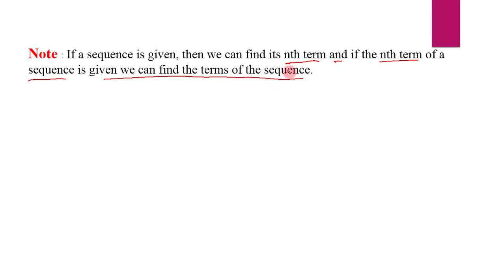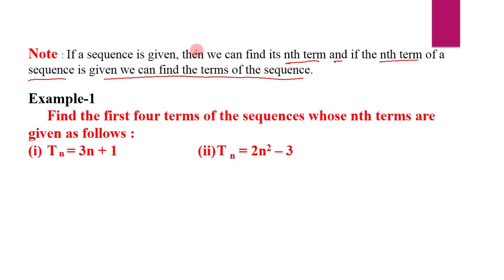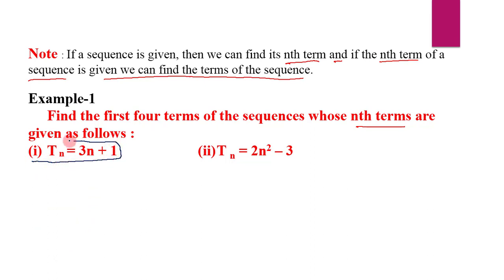Example 1: Find the first four terms of the sequence whose nth term is given as Tn = 3n + 1. Since the nth term is given, we can write the sequence by substituting suitable values of n. To get the first term, take n = 1; to get the second term, take n = 2; and likewise keep substituting to get each term.